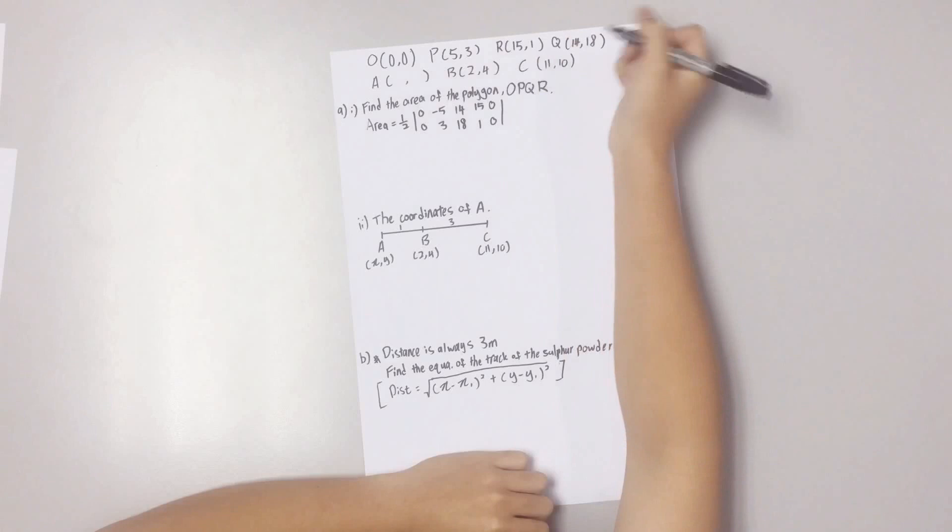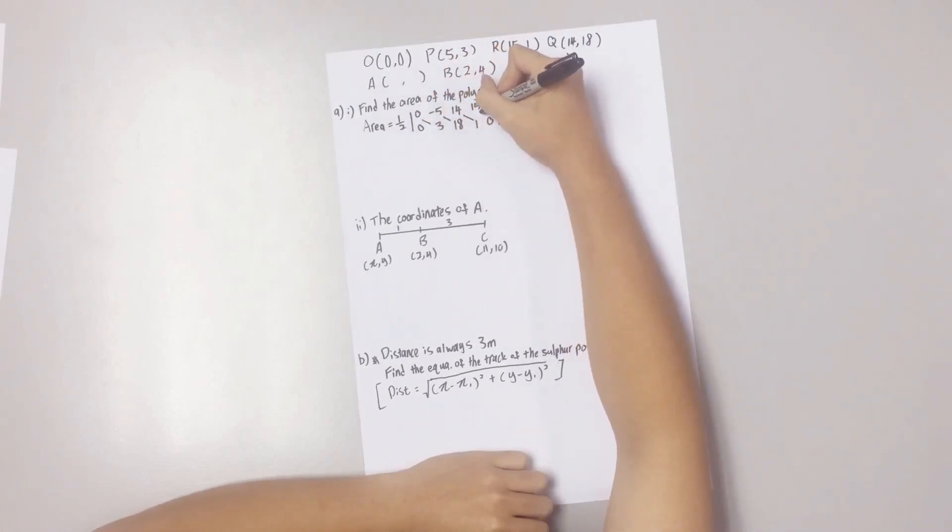Now you cross-multiply the values, like so.